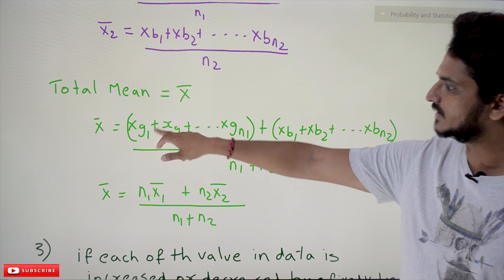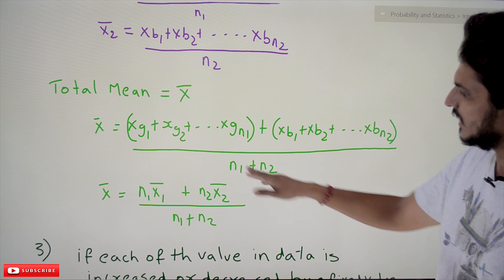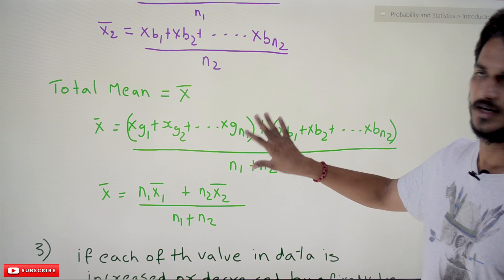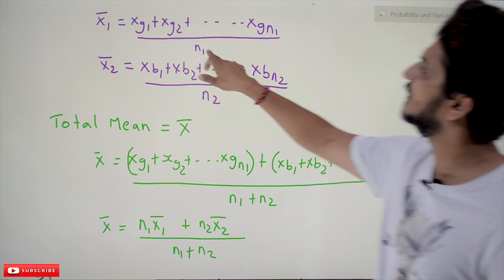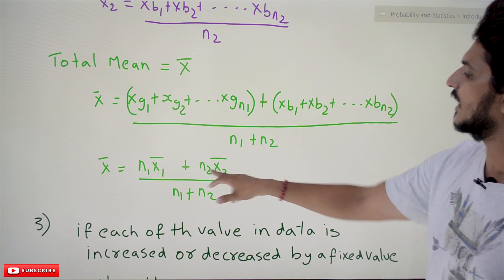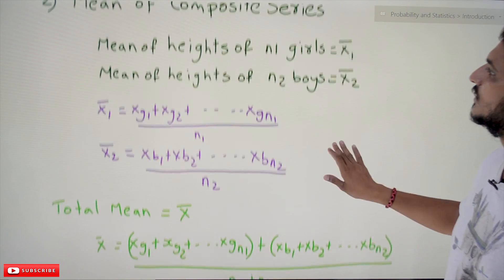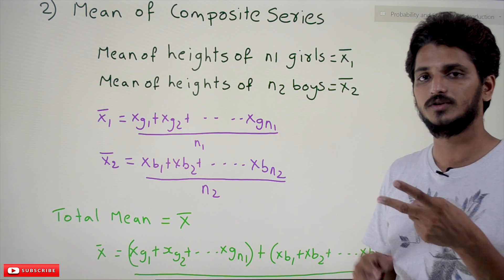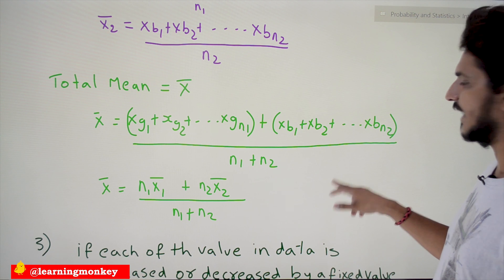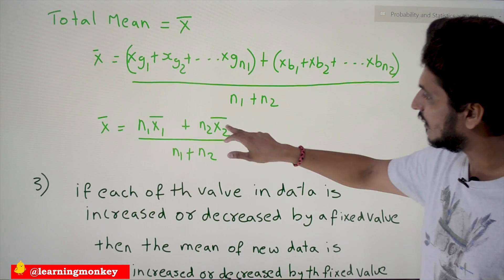The total mean x̄ = (xg1 + xg2 + ... + xgn1 + xb1 + xb2 + ... + xbn2) / (n1 + n2). This can be rewritten as (n1·x̄1 + n2·x̄2) / (n1 + n2). This formula is applicable not just for two groups — if you have 10 groups, it extends to (n1·x̄1 + n2·x̄2 + ... + n10·x̄10) / (n1 + n2 + ... + n10).